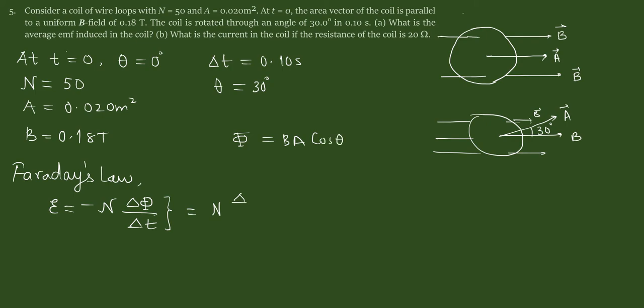So that means we can write emf is n times B A cosine theta over delta t.